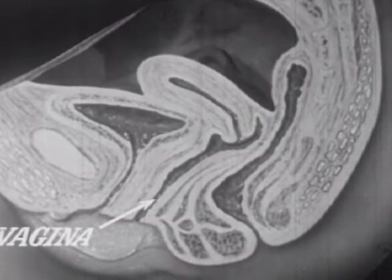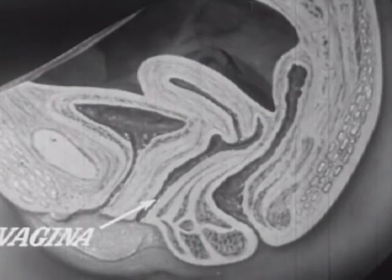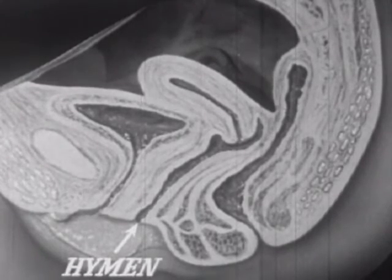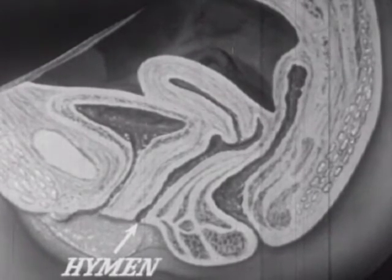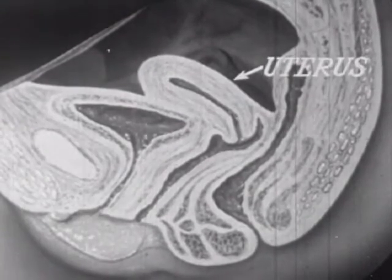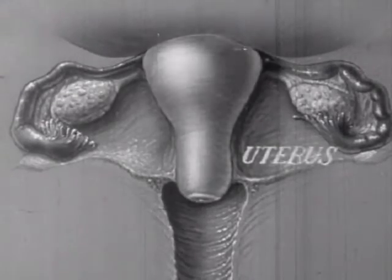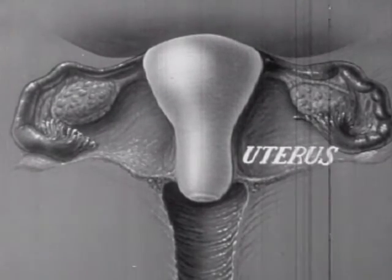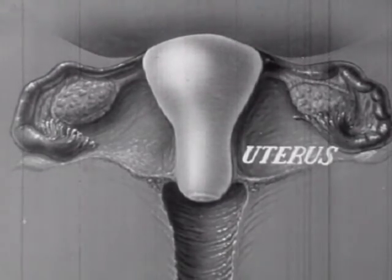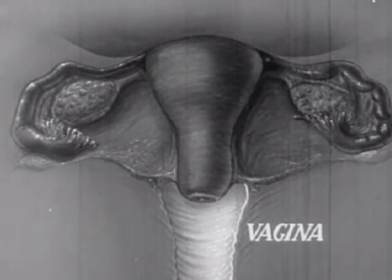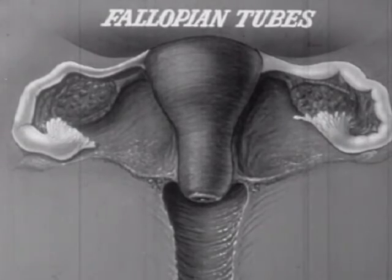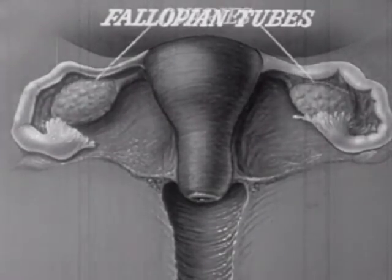A membrane partly covers the entrance to the vagina — this is the hymen, or maidenhead. Its absence does not mean lack of virginity, since it may be accidentally broken during childhood. The uterus, shown here in a front view, is a small pear-shaped organ, normally only about half the size of a fist. Below it is the vagina, and connected to it at the top are two tubes — the fallopian tubes — and the two ovaries.